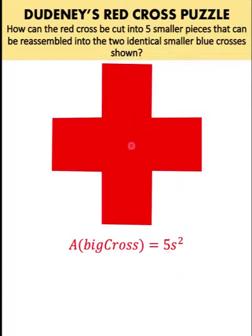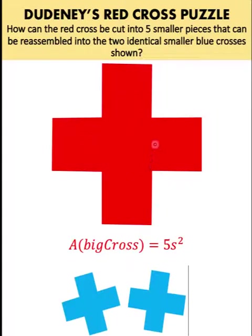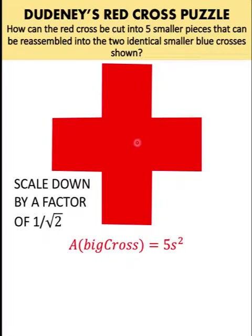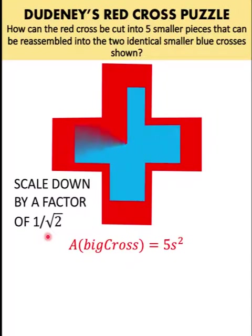Now, if you want to create two identical crosses from this one big red cross, that means the area of each of those two identical crosses must be half the area of this big red cross. And we can achieve that if you are going to create another cross that is scaled down by a factor of 1 over square root of 2. And this is the cross that we want. The blue cross is a scaled down version of the red cross by 1 over square root of 2.